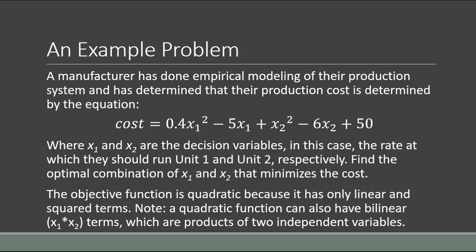Here's an example problem. A manufacturer has done empirical modeling of their production system and determined that production cost is: cost = 0.4·x1² − 5·x1 + x2² − 6·x2 + 50. The squared terms relate to the quadratic part of the objective function, and the linear terms (−5·x1 and −6·x2) will go into our F vector. The coefficients 0.4 and 1 will be built into our H matrix.